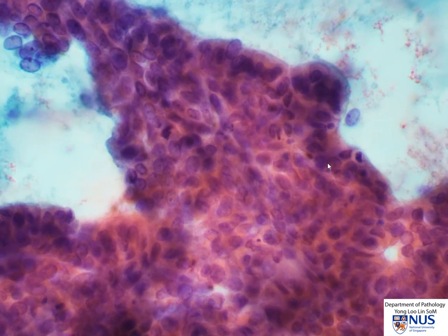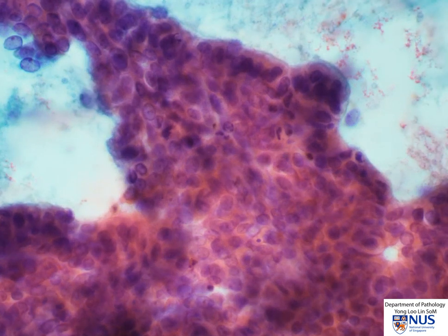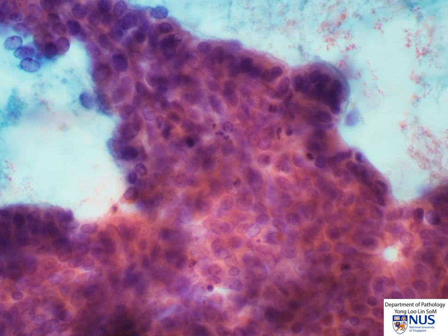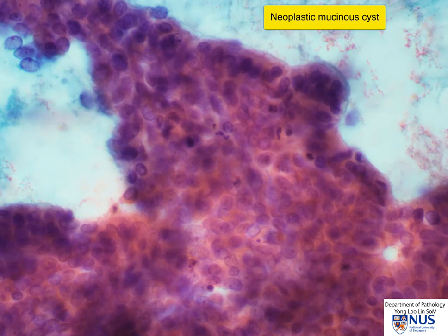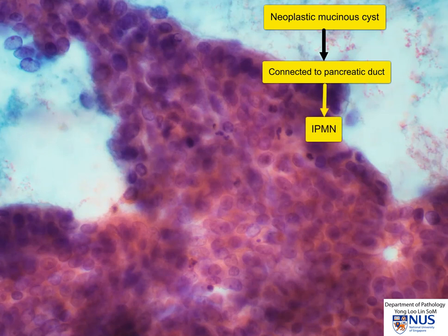We can see the mitotic figure more clearly here — mitoses are actually quite easy to identify. Therefore, this cystic lesion in the pancreas is likely to be a mucin-producing cystic neoplasm. And because of the presence of a connection to the main pancreatic duct, this is most likely to be an IPMN. Looking at the cytomorphology, there are no definite high-grade features here. So the diagnosis can be given as IPMN with low-grade cytologic atypia, no definite areas of high-grade atypia. This is helpful to clinicians in their planning of management in terms of whether resection is indicated.